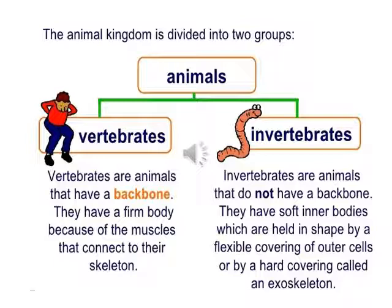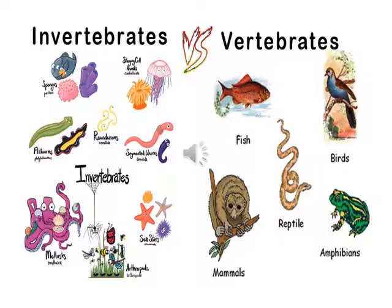Invertebrates are held in shape by a flexible covering or by a hard covering called an exoskeleton. These are the two groups into which animals are divided, and we will discuss invertebrates more in depth. Examples of invertebrates include sponges, jellyfish, worms, octopus, insects, and starfish. Examples of vertebrates include fish, birds, mammals, reptiles, and amphibians.